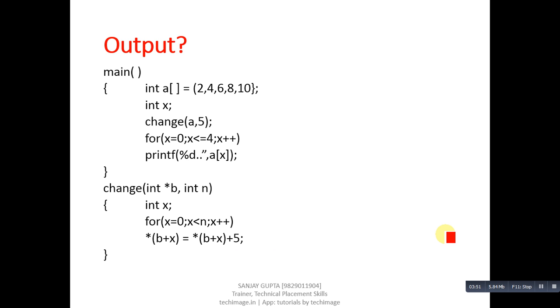This is another code segment. Read it carefully - it contains two functions. First is main and second one is change. Inside main, array variable is declared, then calling of change function, then loop is printing value of a[x]. Change function is defined which is receiving two arguments b and n, then it is updating value of b[x] by 5.